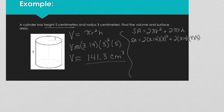Putting it all on one line: 2 times 3.14 times 3 squared plus 2 times 3.14 times 3 times 5, and I get 150.72 centimeters squared for the surface area.